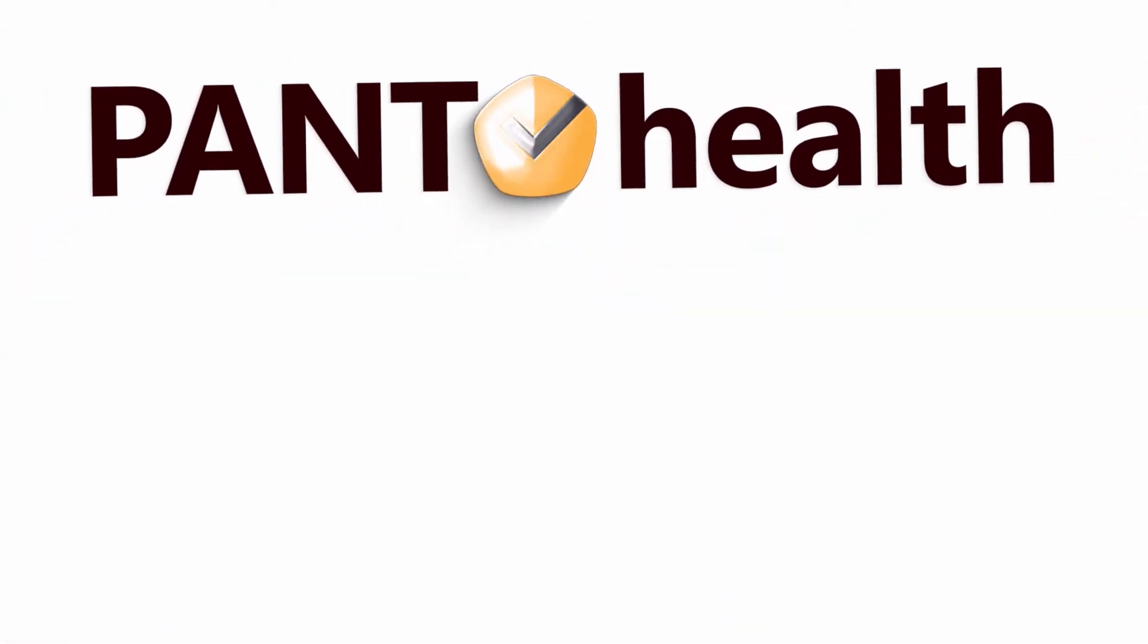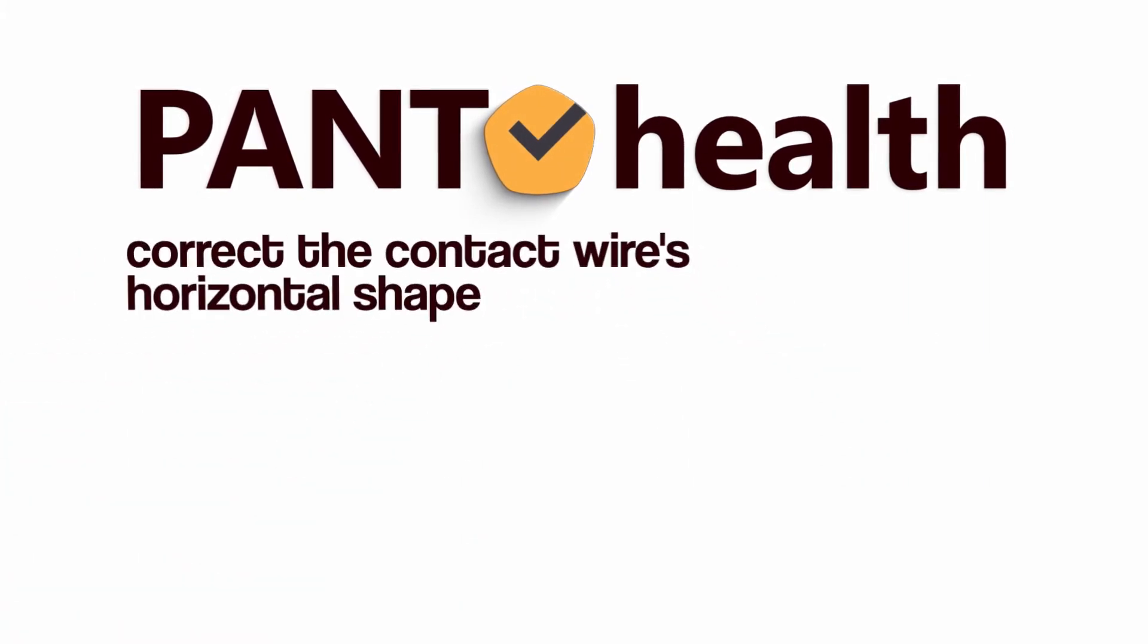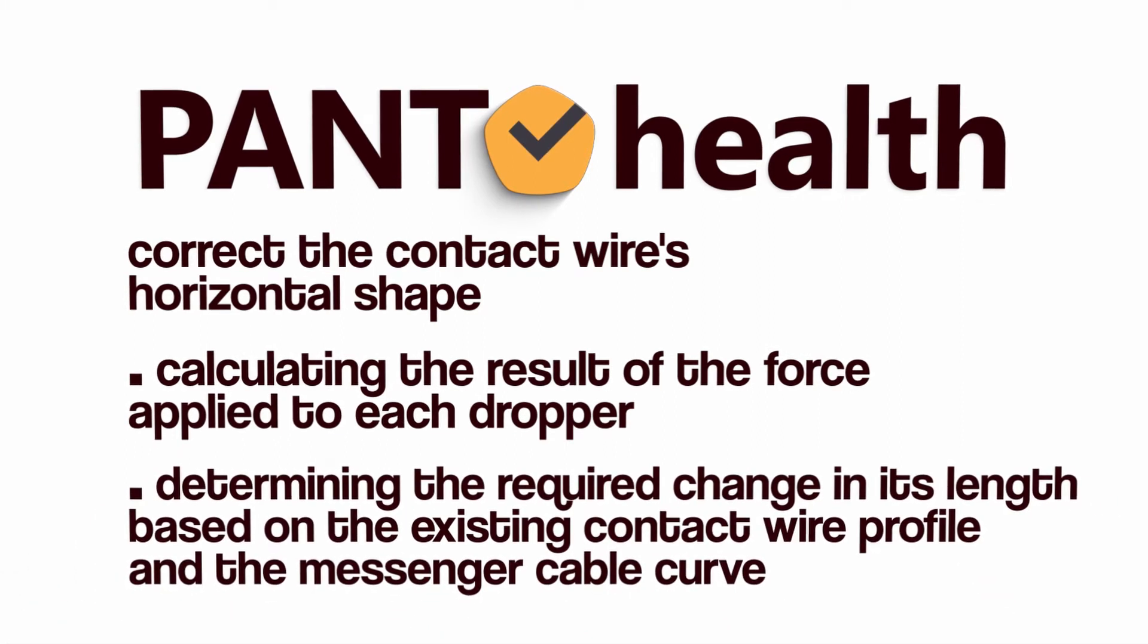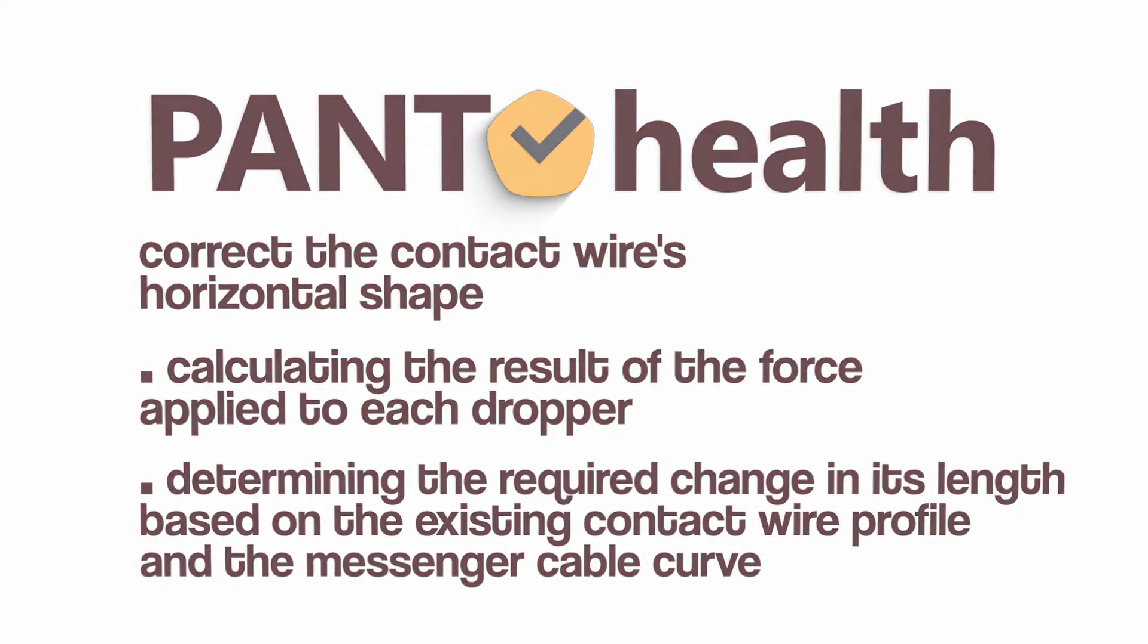PandaHell's solution to prevent such defects is to correct the contact wire's horizontal shape by calculating the result of the force applied to each dropper and determining the required change in its lengths based on existing contact wire profile and the messenger cable curve.